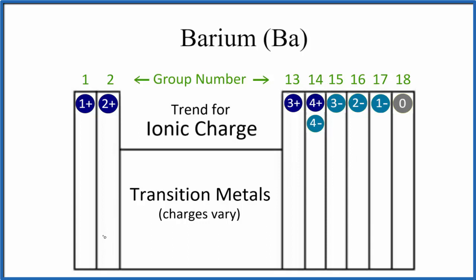Barium is right here on the periodic table, so barium is in group 2, and because of that, it has a 2+ charge when it forms ions.